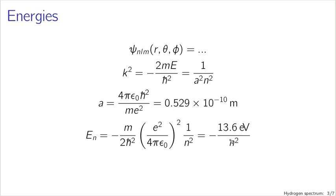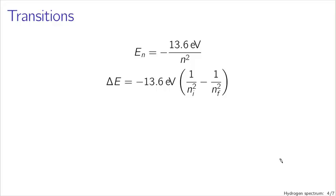These stationary states are not going to be truly stationary, because atoms bump into each other and interact in random ways we haven't described yet. These energies are not going to remain forever fixed. If I prepare an atom in, say, the n = 3 quantum state, it's not going to stay there forever. After a while, it will lose that energy, and when it does, it will emit a photon.